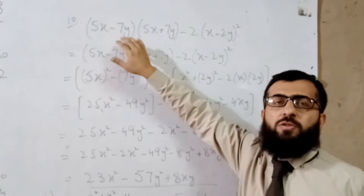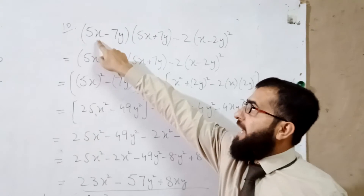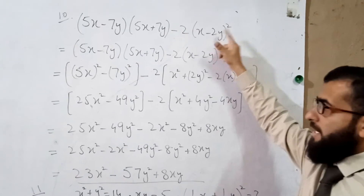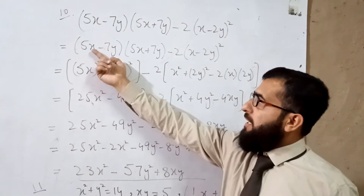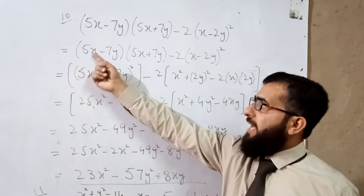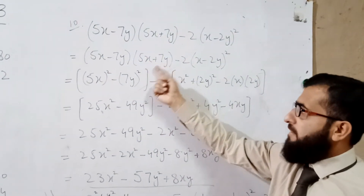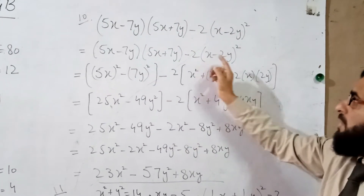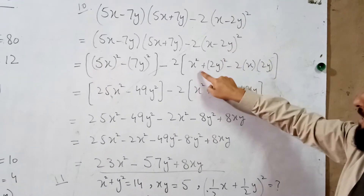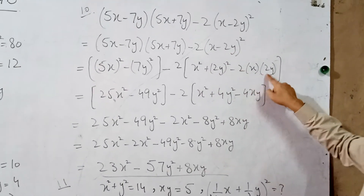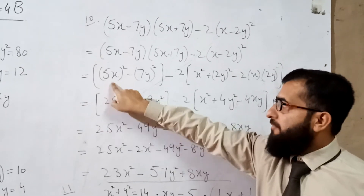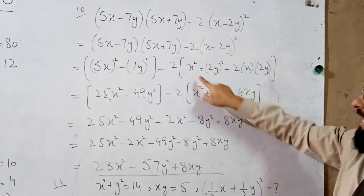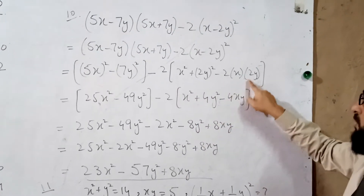Here you can see two formulas are being applied: (a − b)(a + b) and (a − b)². First, (5x − 7y)(5x + 7y) = 25x² − 49y². Then open (a − b)²: a² + b² − 2ab, giving 2(x² + 4y² − 4xy) = 2x² + 8y² − 8xy.